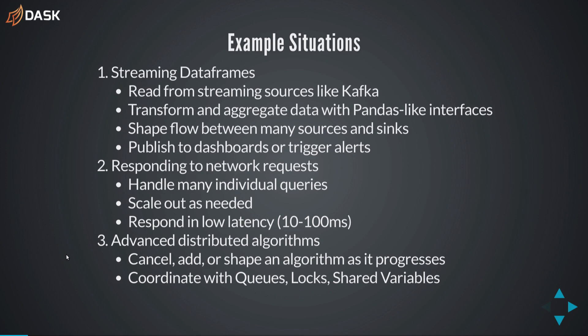We're going to talk about streaming data frames — what most people think of immediately when they think of real-time systems like Spark Streaming or Flink. You have data coming off Kafka, you want to transform and aggregate it with a pandas-like API, control data flow, handle buffering, and publish dashboards. We'll also look at responding to network requests and building advanced distributed algorithms.